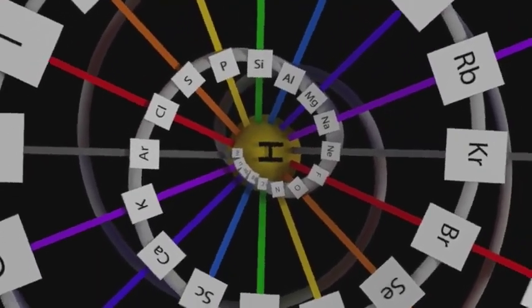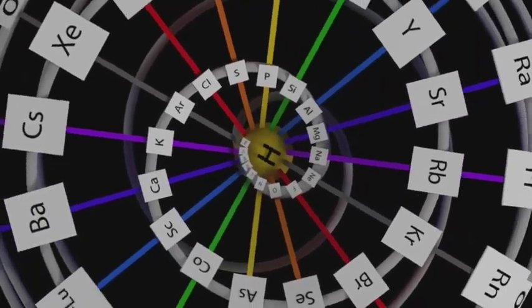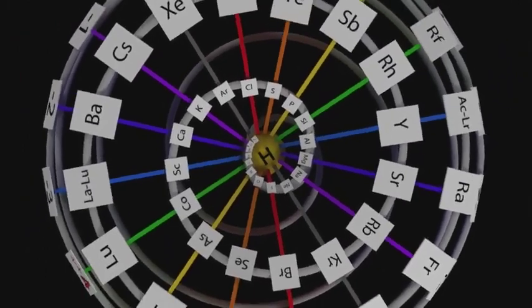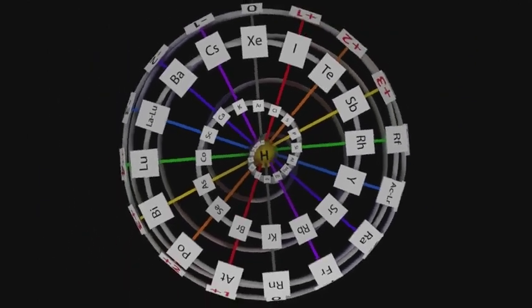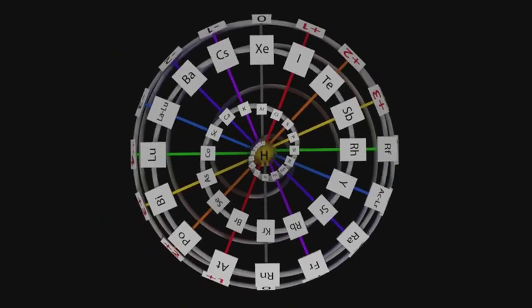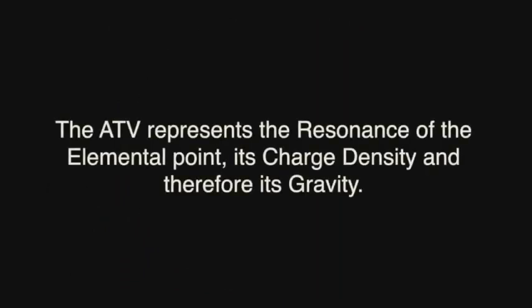The model of the elements describes the parable of family relationships that exist between zero matter, light, matter, sound, crystal form, positive and negative charge, paramagnetic disposition and form. The ATV represents the resonance of the elemental point, its charge density, and therefore its gravity.